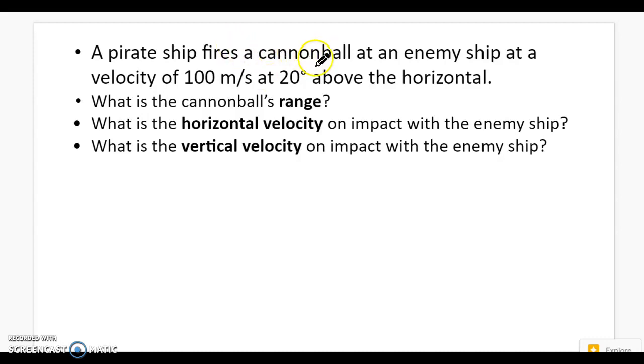Before we actually set up the problem, it's really kind of making sure we understand what's going on. We got this pirate ship. It fires a cannonball at an enemy ship at a velocity of 100 meters per second at 20 degrees above the horizontal. What is the cannonball's range? What is the horizontal velocity and vertical velocity on impact with the enemy ship?